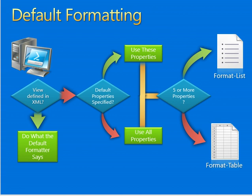You can see in the view definition XML what the default format says — use default properties specified, or use all properties. Against five or more properties you can choose either format-table or format-list. You can explicitly choose which output format Windows PowerShell should use, including format-table, format-list, format-wide, or format-custom. Simply add a specific formatter at the end of the pipeline. Let's have a look at how that works.